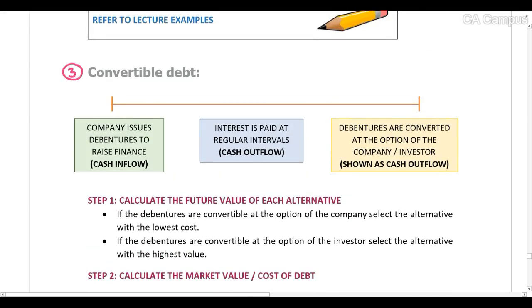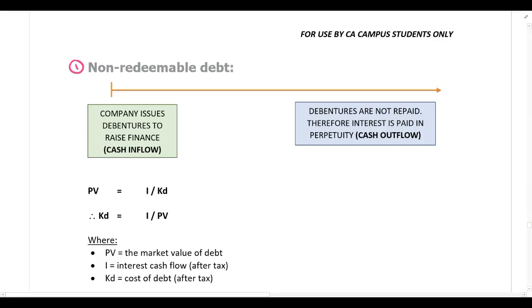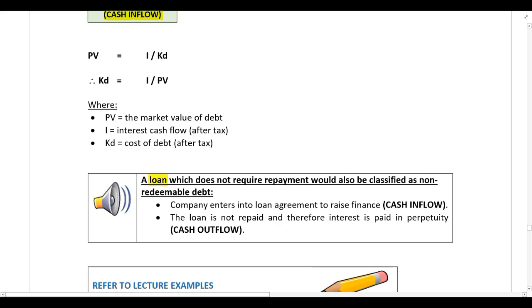Debt can either be non-redeemable, redeemable, or convertible. You need to determine upfront what you're dealing with, because your calculation changes depending on the type. Non-redeemable debt can be a debenture that the company issues and never redeems — paying interest in perpetuity. A loan can also be classified as non-redeemable if it does not require any repayments, making it debt in perpetuity.